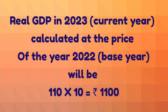Both these figures give us the value of nominal GDP. Now, in order to compare GDP figures of two different years, we need to calculate real GDP. Here 2023 is the current year and 2022 is the base year. Real GDP in 2023, calculated at 2022 prices, will be 110 × 10 = ₹1,100.